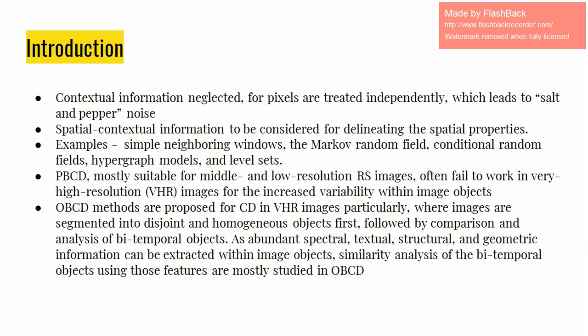However, contextual information is neglected as pixels are treated independently, which leads to a great deal of salt-and-pepper noise. To overcome this drawback, spatial contextual information must be considered for delineating spatial properties. Many models have been introduced for this purpose, such as simple neighboring windows, Markov random fields, conditional random fields, and hypergraph models. However, pixel-based methods are mostly suitable for middle and low resolution remote sensing images.